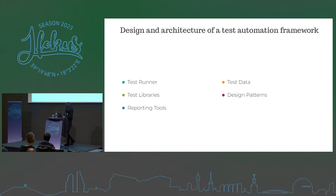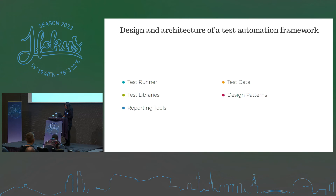The test libraries — there are a lot of test libraries we can use within our application or our frameworks. For example, if you're working on JavaScript or Java, the most known is JUnit. Test libraries are a collection of reusable functions and methods that can be used to perform common tasks during testing, such as functions for logging in, navigating the application, and verifying application state.